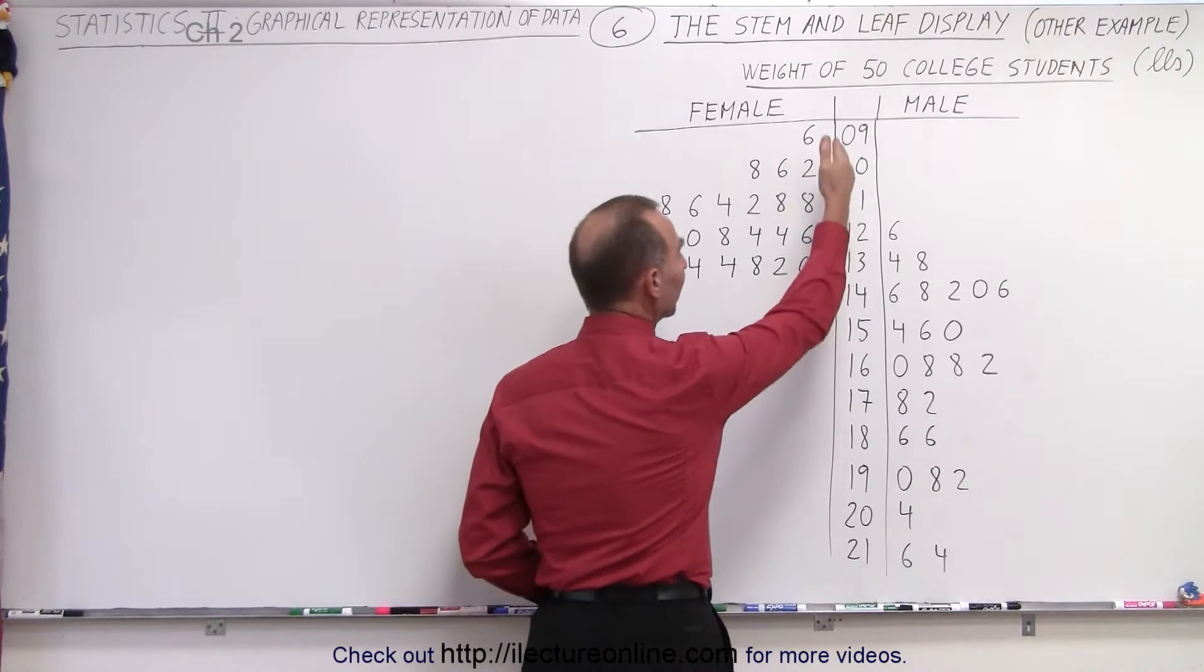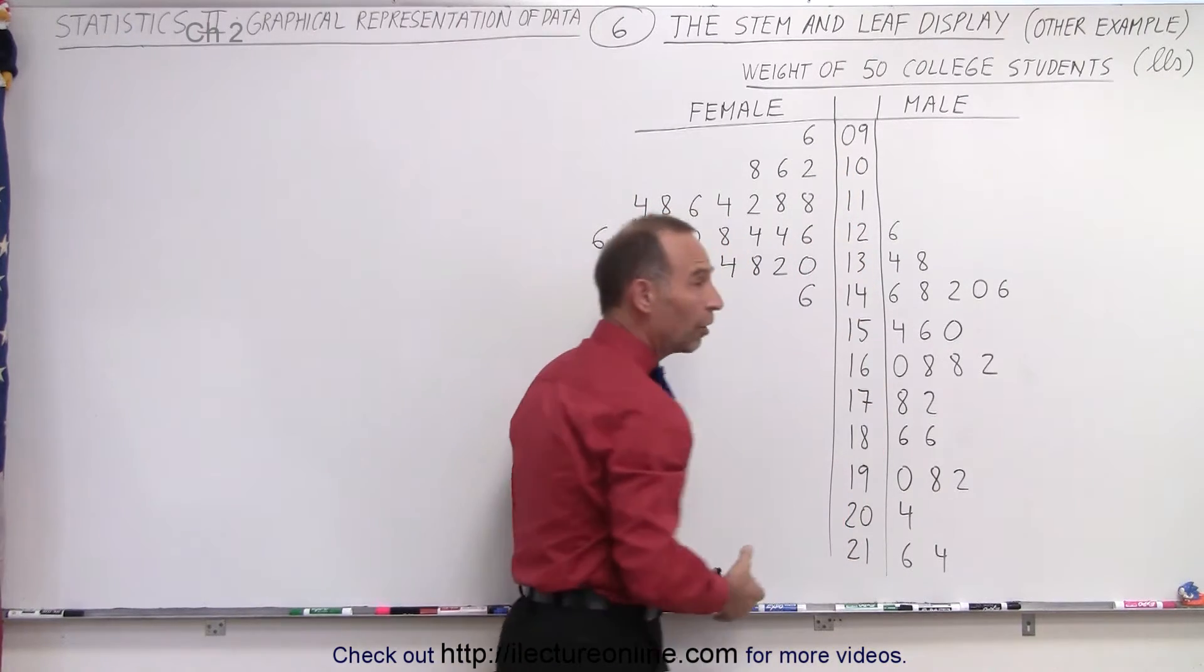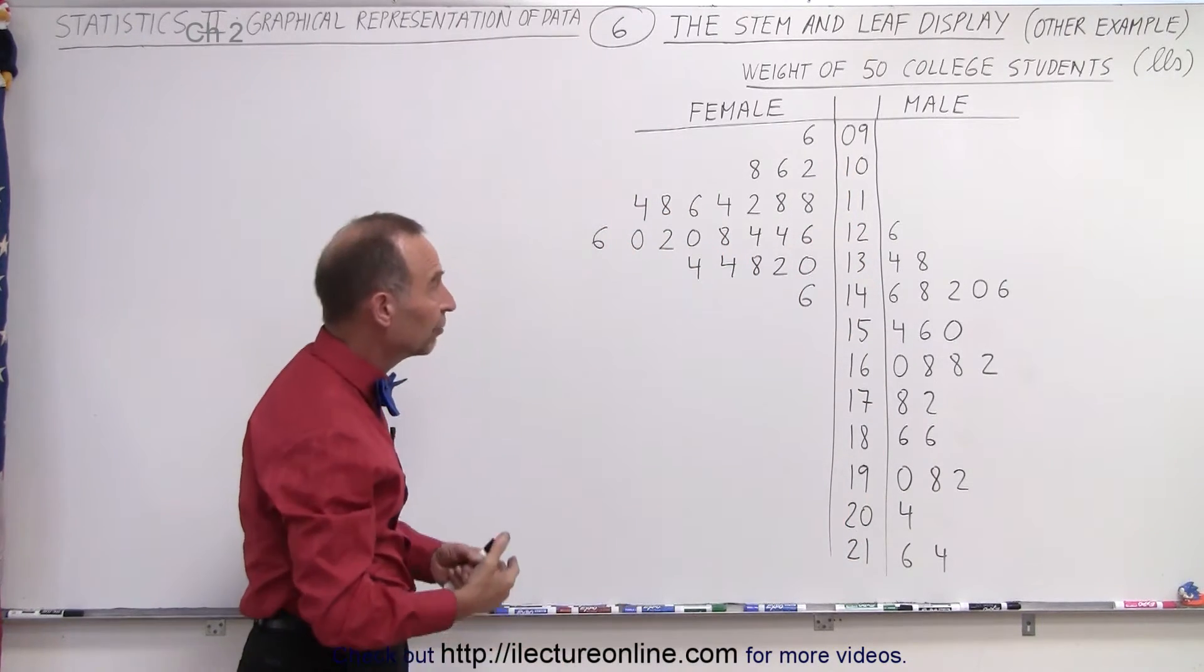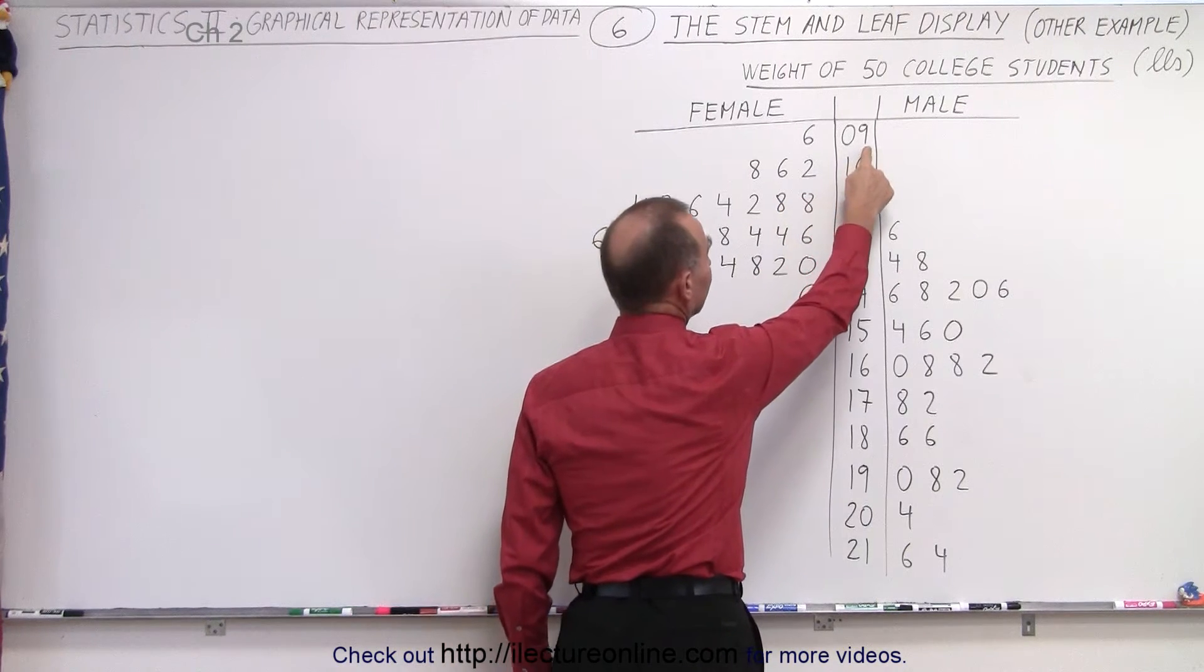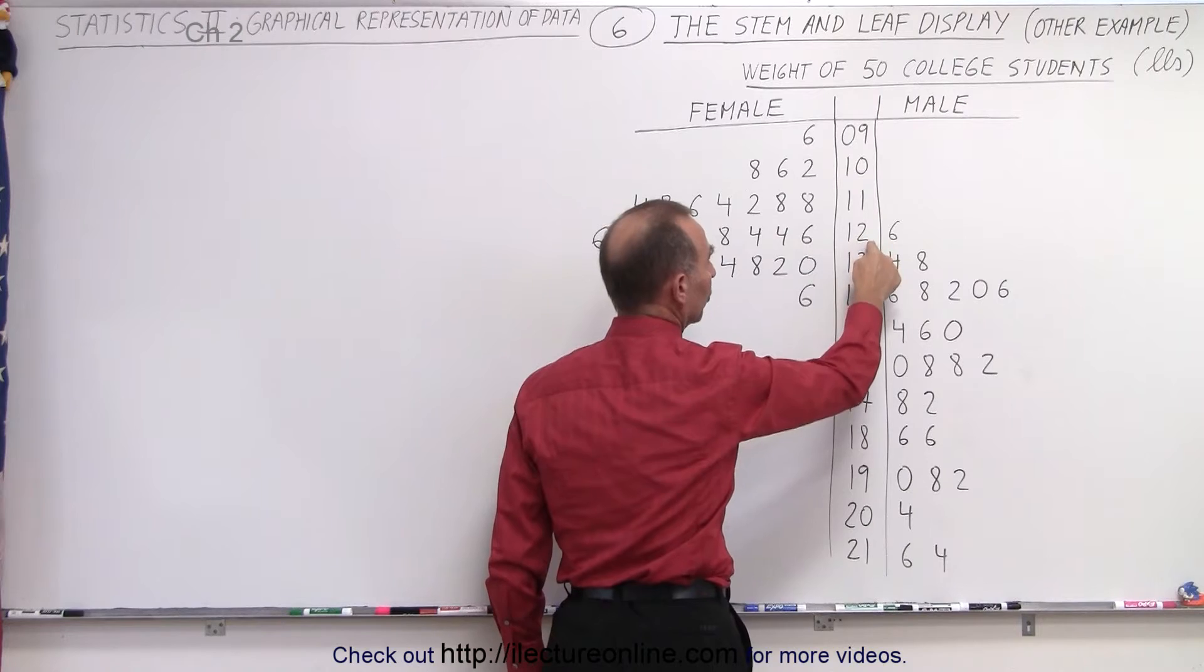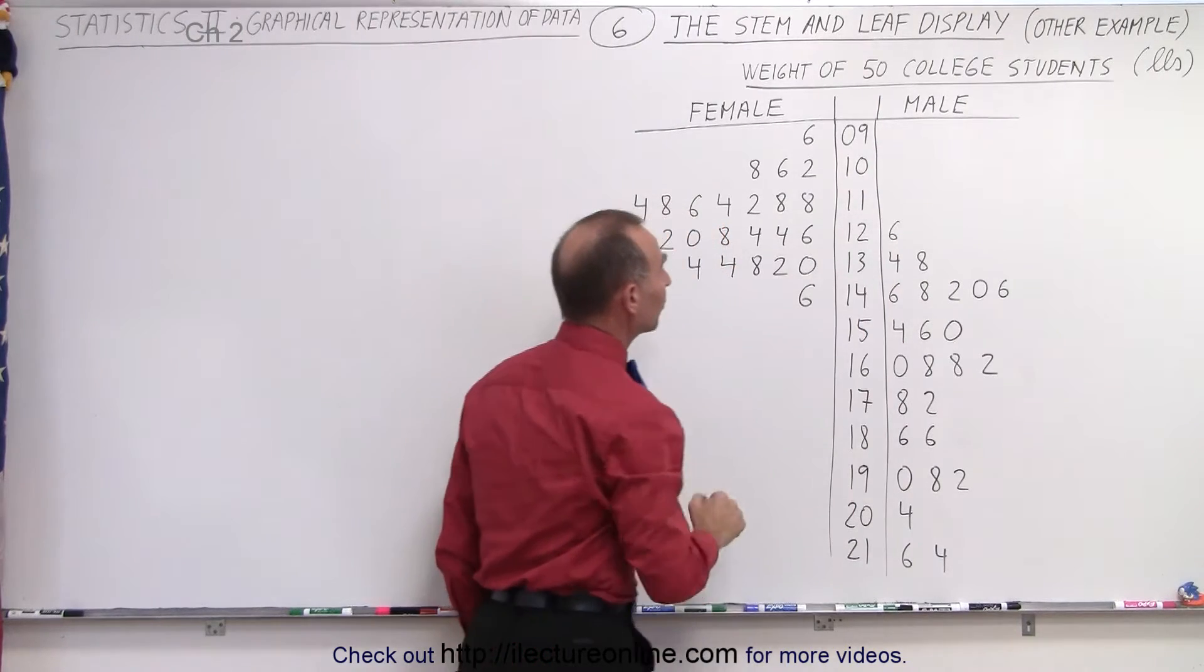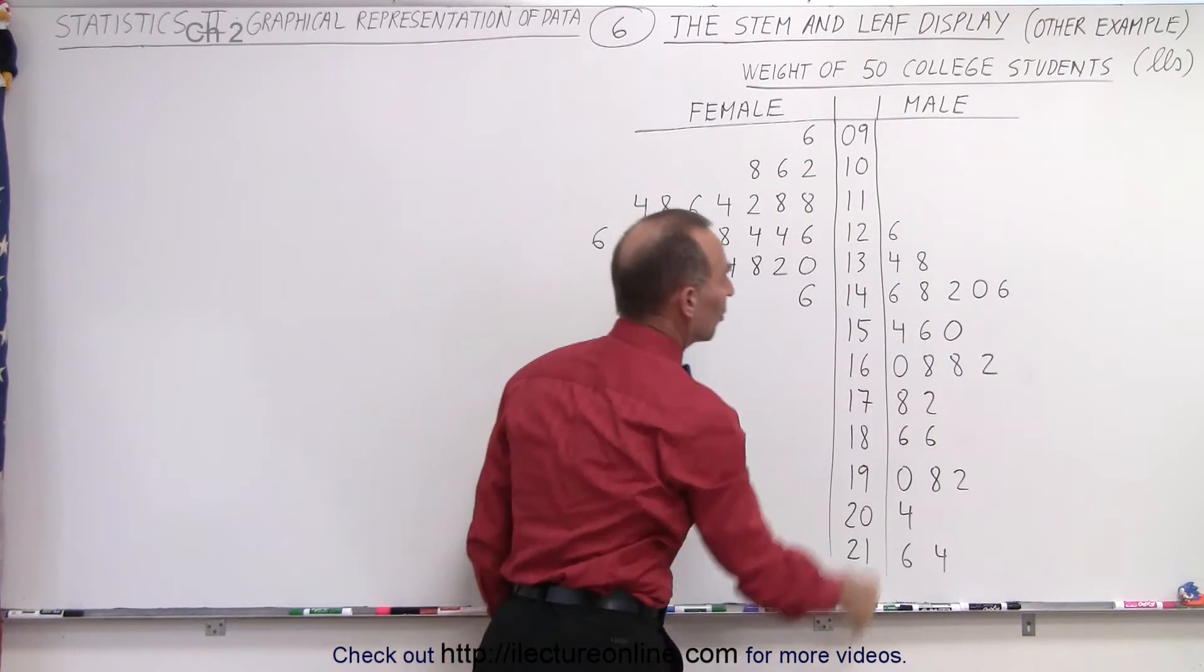Notice in the center column you have the first two digits of the three-digit weight of the people involved. Notice that we have 09 here representing 90, 100, 110, 120, 130. The weight is in pounds and then here we have the last digit.